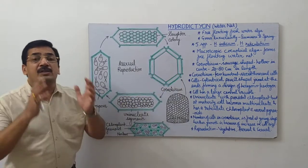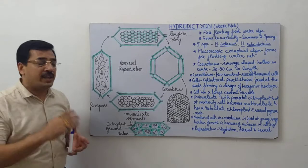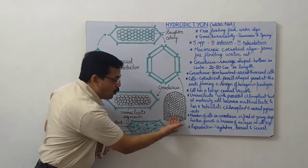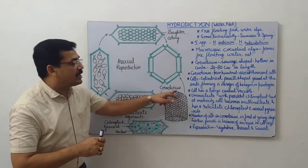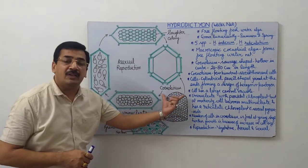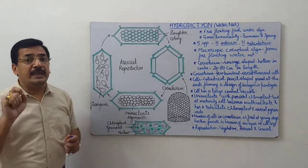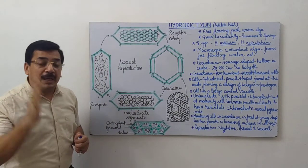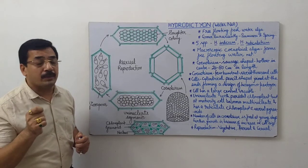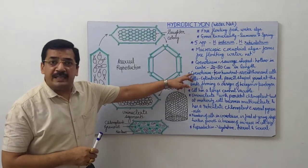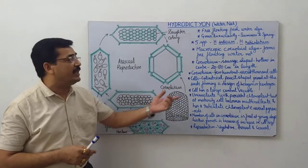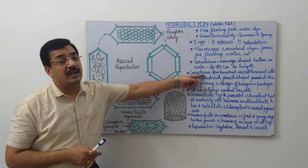The coenobium are sausage shaped. The colony looks like a net, open at one end and closed at the other end. The length of this coenobium may be from 20 to 80 centimeters, but sometimes you can see lengths of one meter also. The coenobium contains several similar cells, and the number of cells varies from few hundred to several thousands.